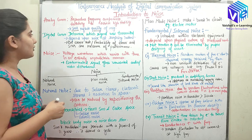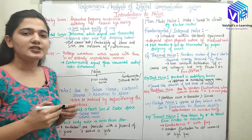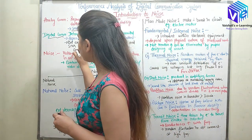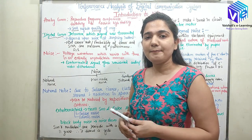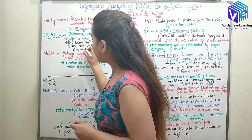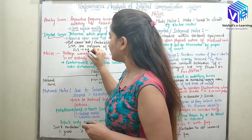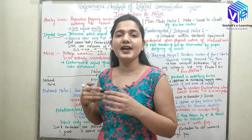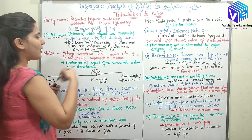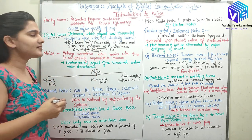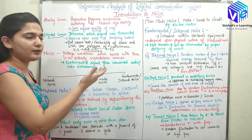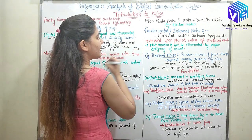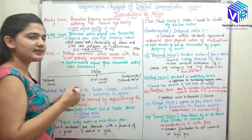In digital communication, I do not need to know about the exact reproduction of frequency components because here I am transmitting either 0 or 1. At the sampling instant, I can determine if the value is positive or negative. If it is positive, it represents 1; if it is negative, it represents 0. The exact voltage does not matter — positive means 1, negative means 0.